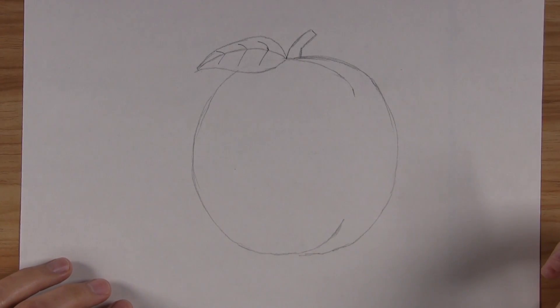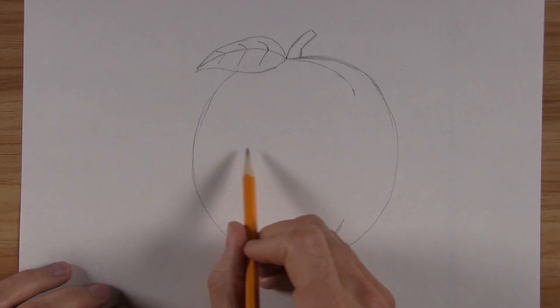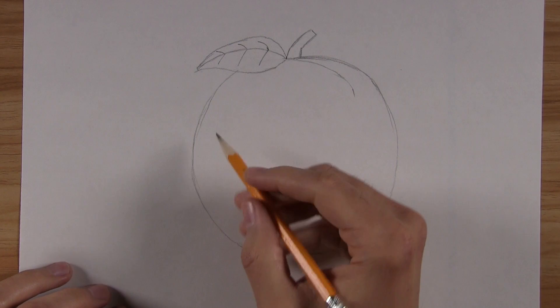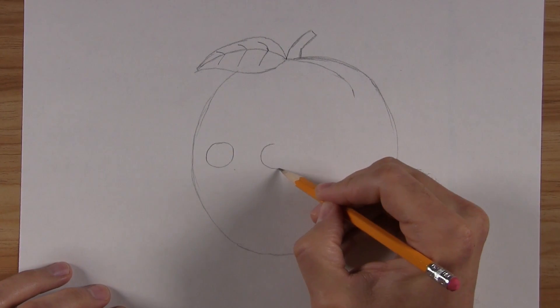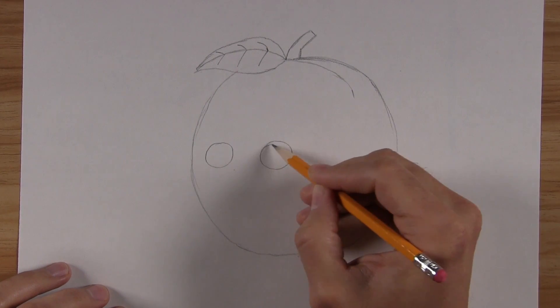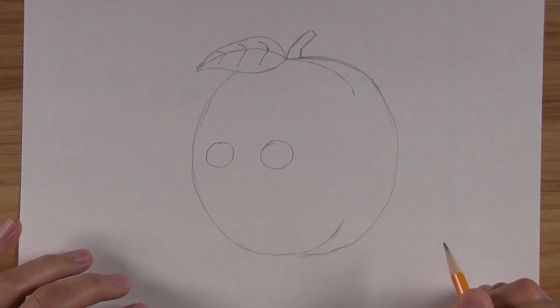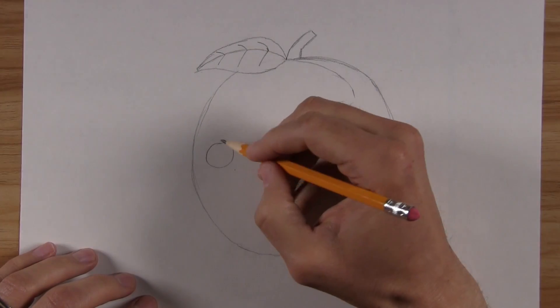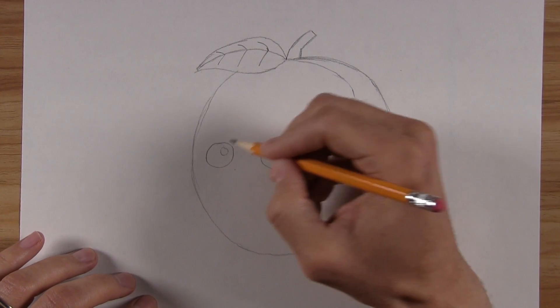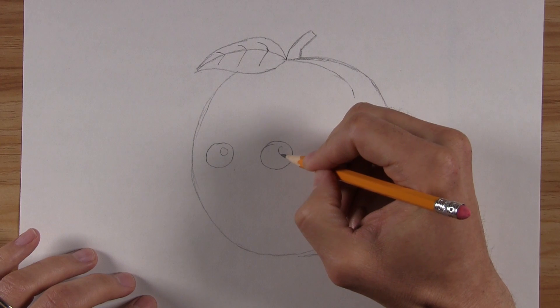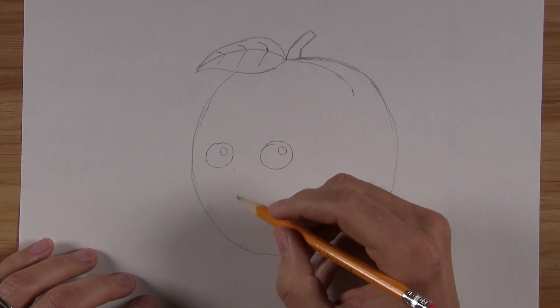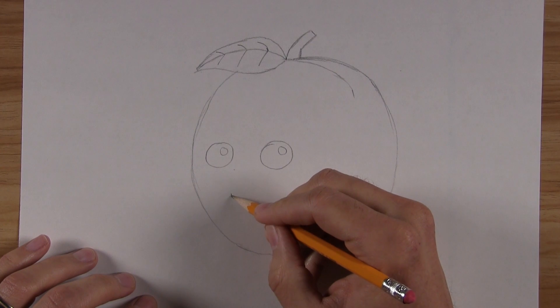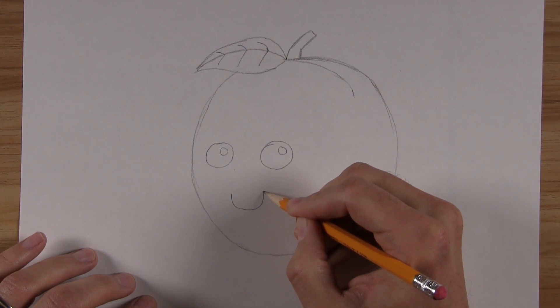I'm sure your peach is looking awesome. But we're trying to make a cute peach here. So let's add a smiling face. We'll start by drawing two big circles for eyes, about halfway down from the top. Next, draw a smaller circle inside each of the big circles. These will be highlights in the eyes. Finish up by drawing a U shape to give our peach a happy smile.